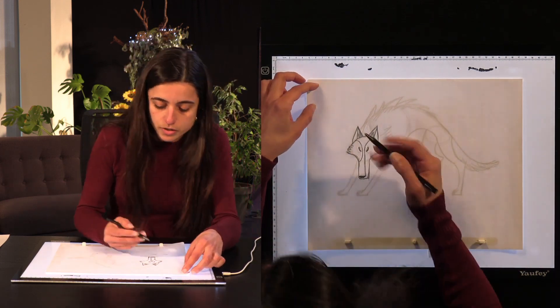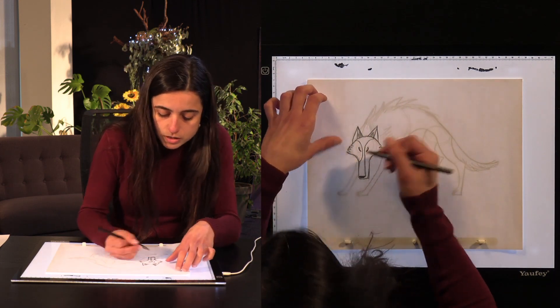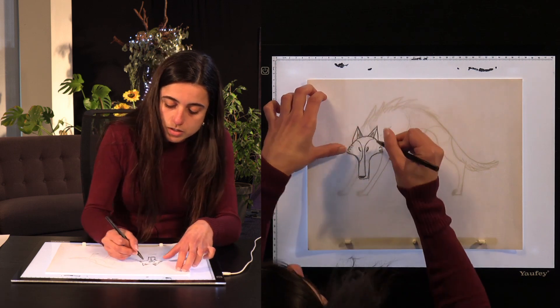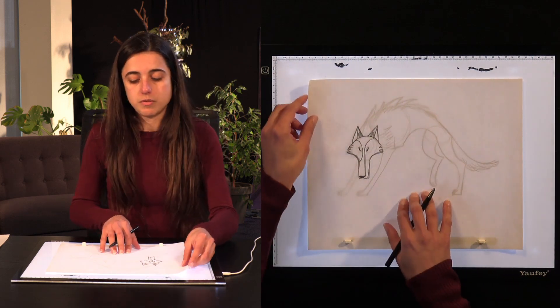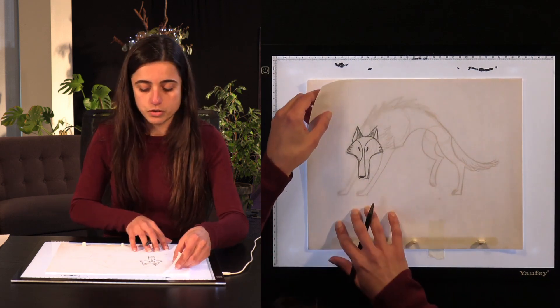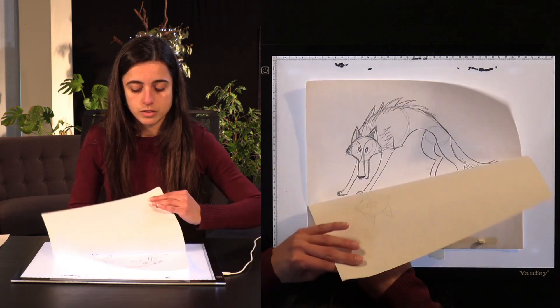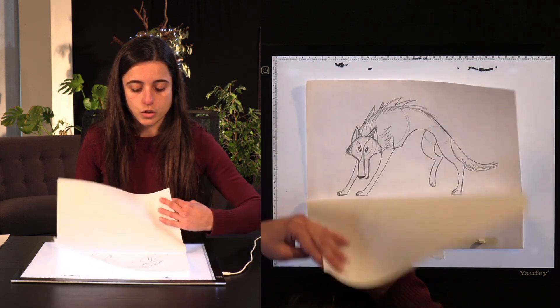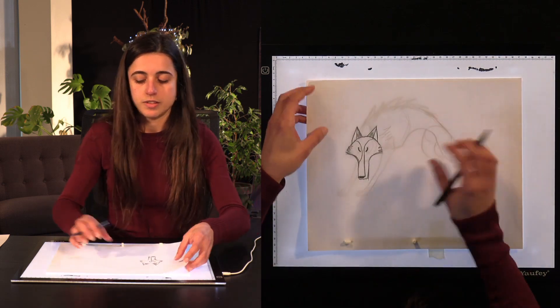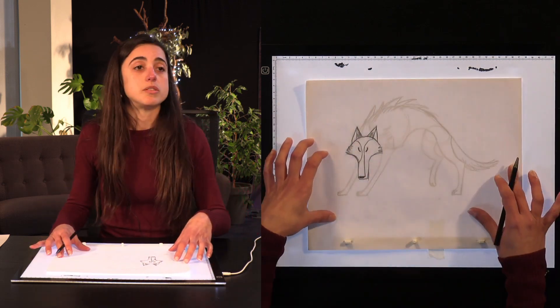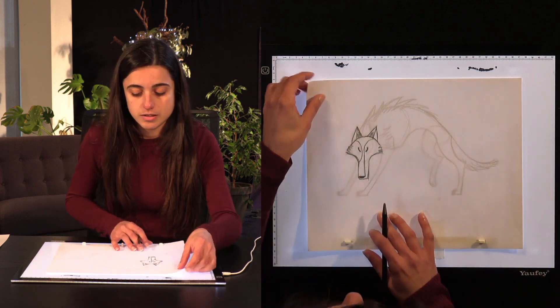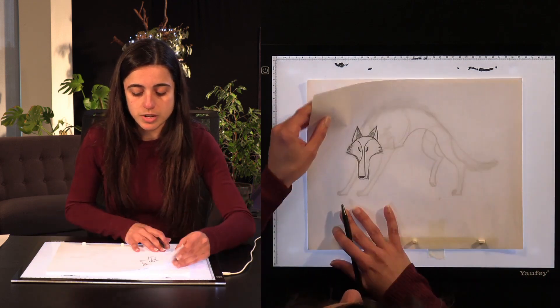So what you have now is when you flip between your back drawing and your front drawing, you can see your wolf blinking. And then you can just trace the rest of the wolf and do your animation then.